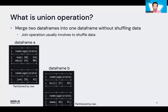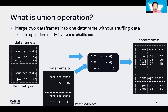Let me show you an example of union operation. We have two data frames A and B. Each data frame is partitioned by two. The union operation merges data frames A and B and returns a new data frame C. Without shuffling data, the two data frames are merged into one new data frame C.